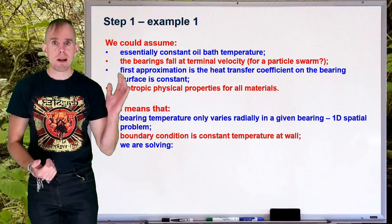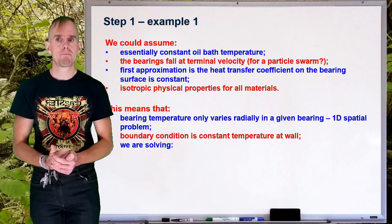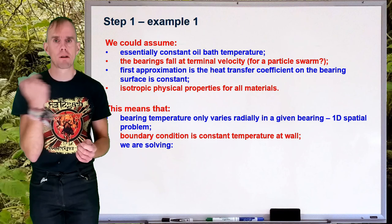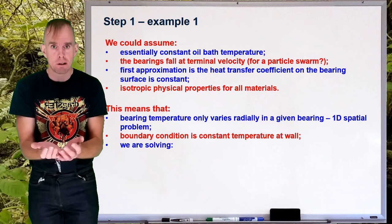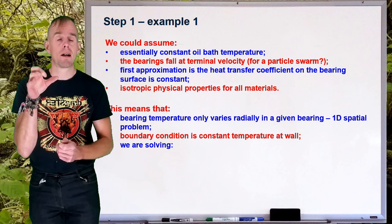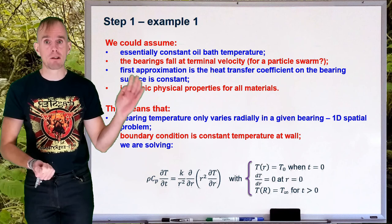OK, so the ramifications of these assumptions means that the temperature of the ball bearing only varies radially, so we can effectively solve the problem as a 1D problem. Because temperature only varies as a function of radius, of angular position or azimuthal position, we have symmetry. It's fine. Because we have that constant heat transfer coefficient on the outside surface and we have a spherical geometry. So, we're going to furthermore see that these assumptions lead to the boundary condition being a constant temperature at the surface of the bearing.